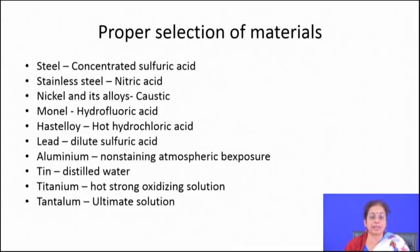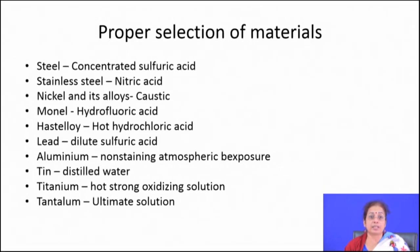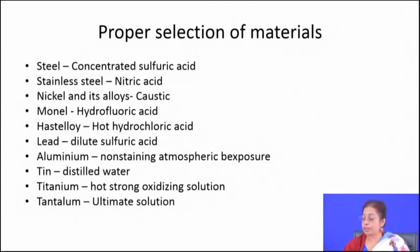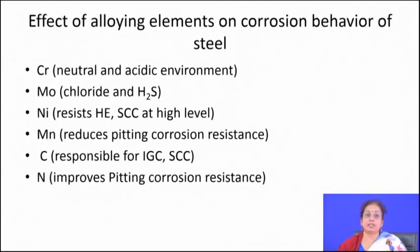This gives a proper guideline for material choice for general corrosion. For stress corrosion you follow the stress corrosion chart; for liquid metal embrittlement you follow that chart; for high temperature oxidation you follow the Ellingham diagram and choose alloys that form thin protective oxide films. Proper choice of material is very important.